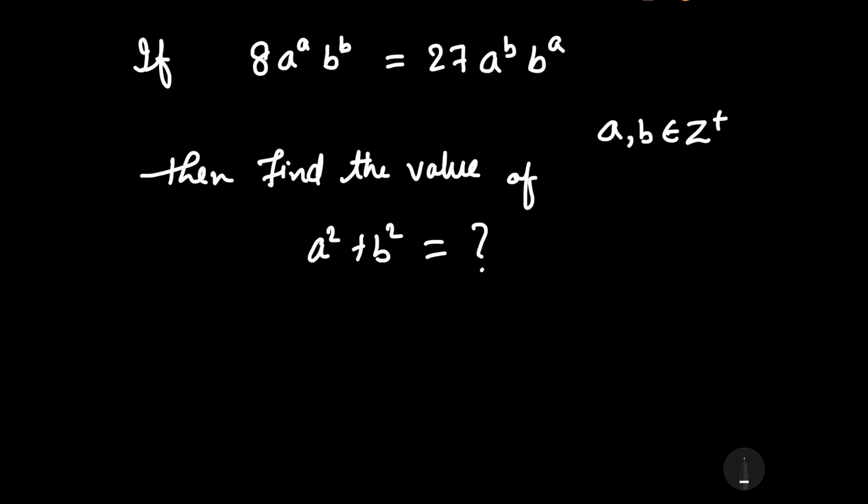Welcome to our YouTube channel Saval Bawal. Our question is: if 8 into a to the power a, b to the power b is equal to 27 a to the power b into b to the power a, and a and b belong to positive integers, then we have to find the value of a squared plus b squared.